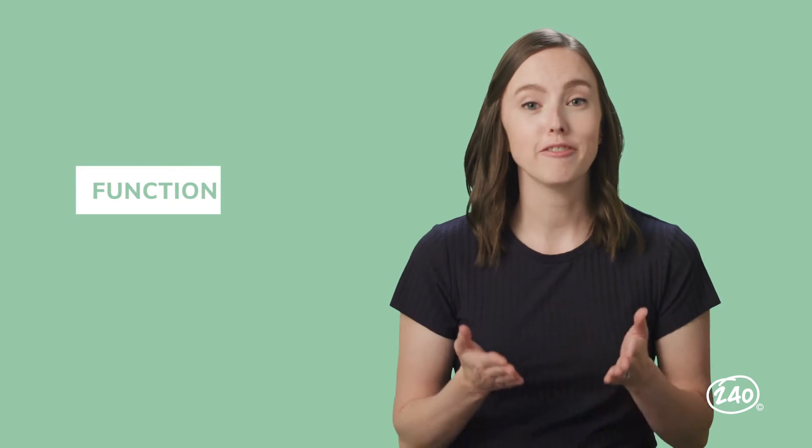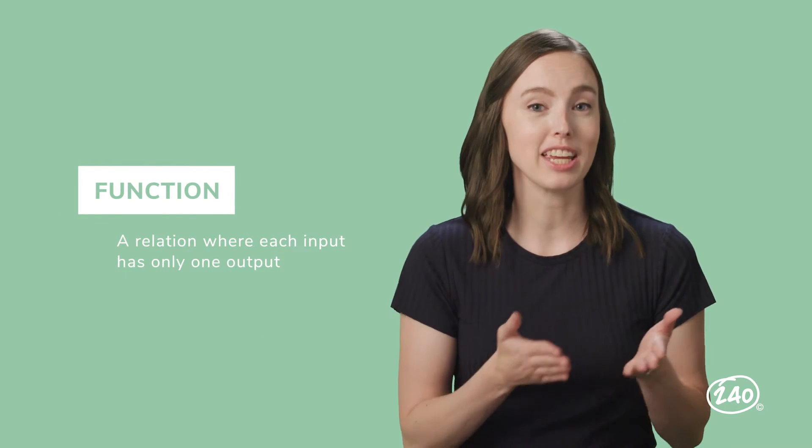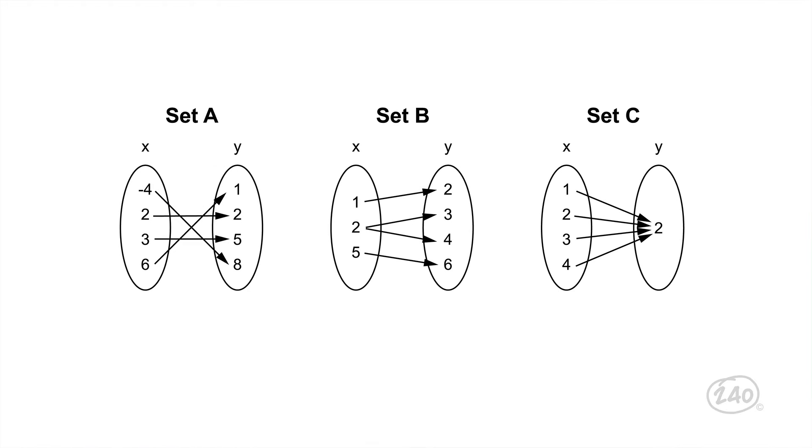Let's just start with the most important part here. What exactly is a function? A function is a special type of relation where each input has only one output. For example, here are three relations. The x values are the inputs and the y values are the outputs. Let's look at set A first. This is a function because each number on the left is connected to only one number on the right. For set B, the number 2 on the left is connected to both 3 and 4 on the right. So set B is not a function. Finally, in set C, each number on the left is only pointed to the number 2 on the right. So this is a function too.